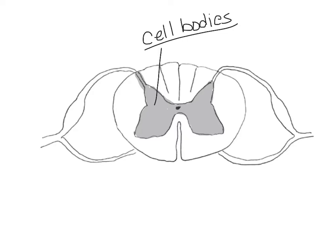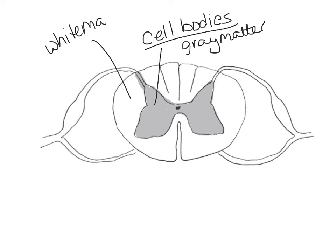The cell bodies are in the gray matter. Then we see this other area around it called the white matter. White matter looks white because of myelin, so white matter is largely composed of myelinated axons.